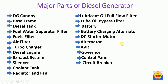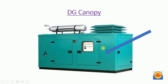The major parts of a diesel generator are: DG canopy, base frame, diesel tank, fuel water separator filter, fuel filter, air filter, turbocharger, diesel engine, exhaust system, silencer, coolant tank, radiator and fan, lubricant oil full flow filter, lubricant oil bypass filter, battery, battery charging alternator, DC starter motor, alternator, AVR, governor, control panel, and circuit breakers.